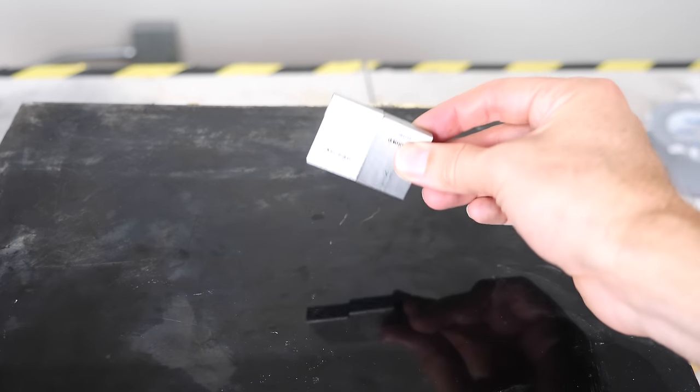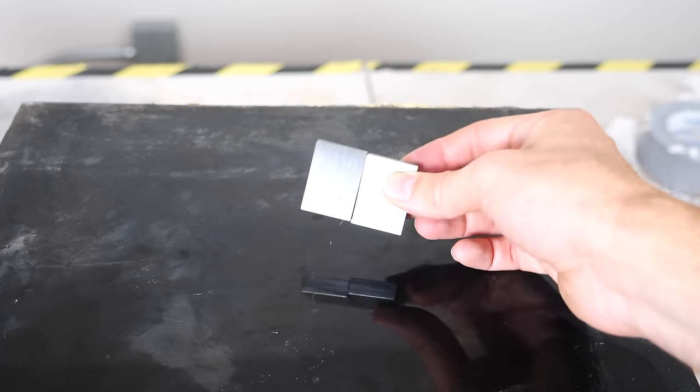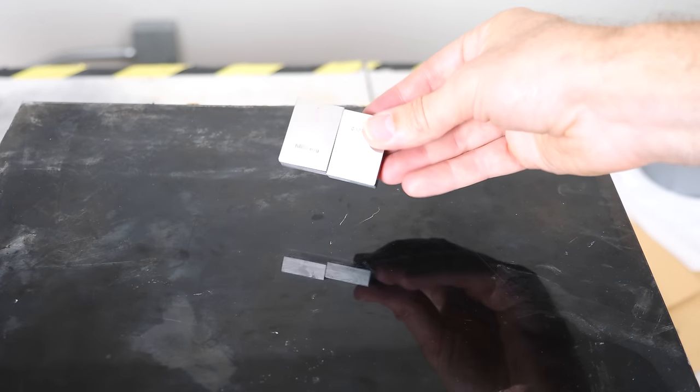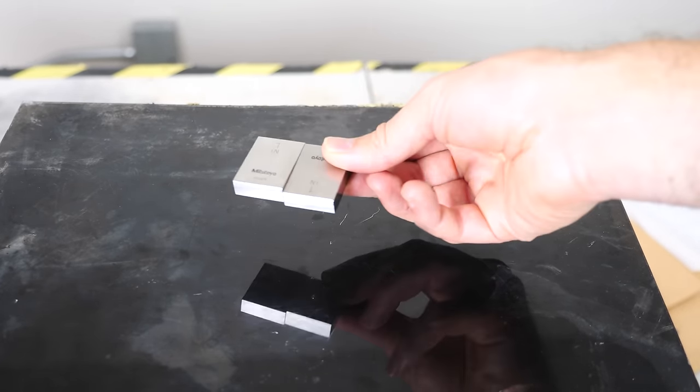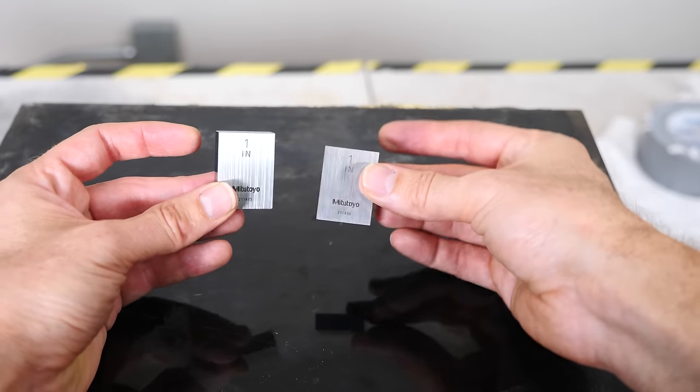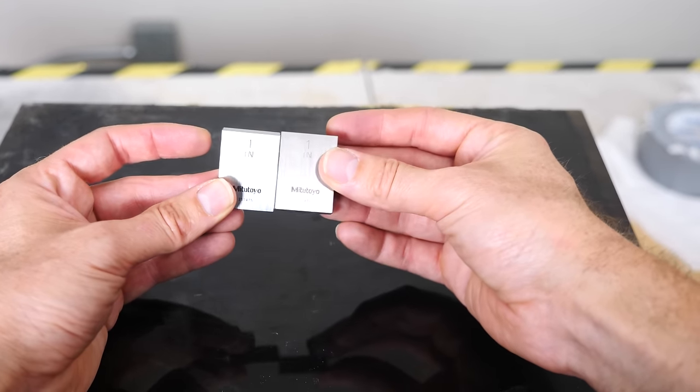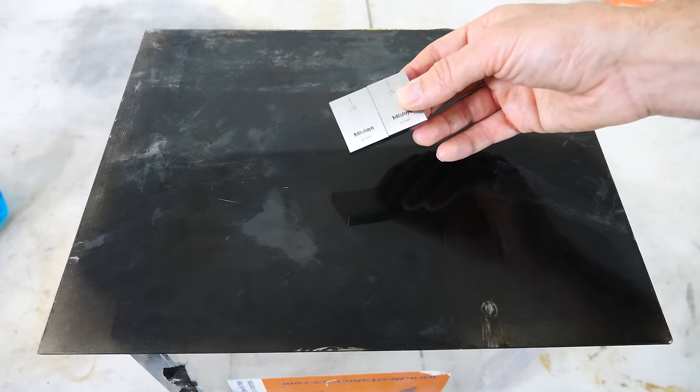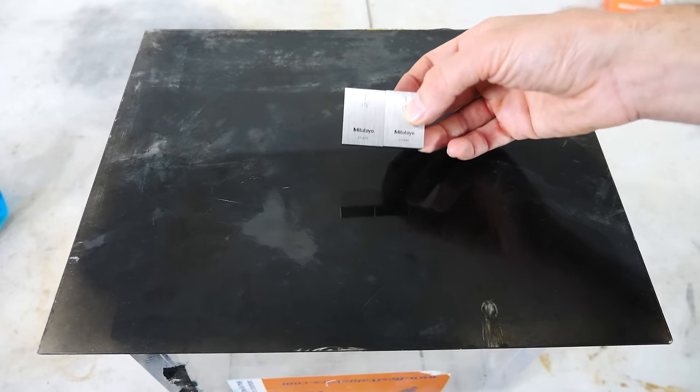This phenomenon of two smooth pieces of metal sticking together is called ringing. And today we're going to be trying to figure out why it happens. These two pieces of metal are actually called gauge blocks. And gauge blocks are the way that we standardize length in the industry. Because gauge blocks can ring together like this, you can actually combine them to get any length that you need.